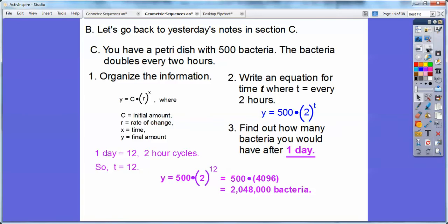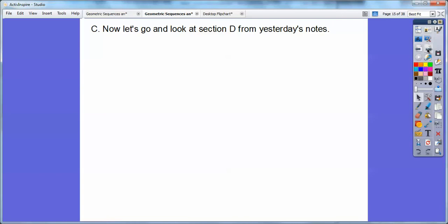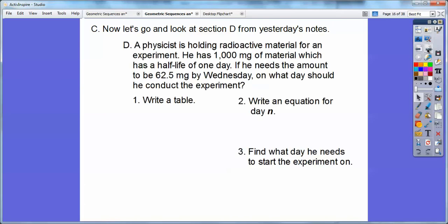Let's try that again with, let's go back and look at section D from yesterday's notes. So here's section D on yesterday's notes. A physicist is holding radioactive material for an experiment. He has 1,000 milligrams. Do you remember what this is, what letter that goes for? This is my starting number. This is that starting number C.